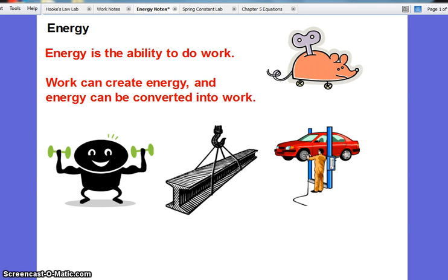Looking at some of our examples here, we see that the toy mouse - what we can do is we can do work by turning the screw and therefore winding up a spring, and that gives us an energy in the spring, stored in that spring.